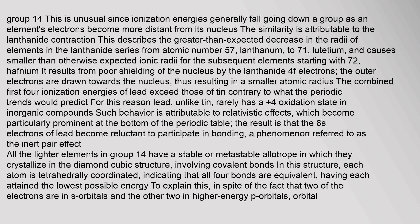The combined first four ionization energies of lead exceed those of tin, contrary to what periodic trends would predict. For this reason, lead, unlike tin, rarely has a +4 oxidation state in inorganic compounds. Such behaviour is attributable to relativistic effects, specifically the inert pair effect, which become particularly prominent at the bottom of the periodic table. The result is that the 6s electrons of lead become reluctant to participate in bonding. All lighter elements in Group 14 have a stable or metastable allotrope in which they crystallize in the diamond cubic structure, involving covalent bonds, with each atom tetrahedrally coordinated.